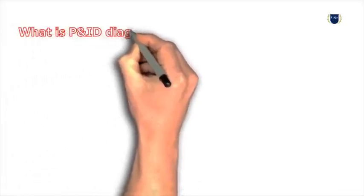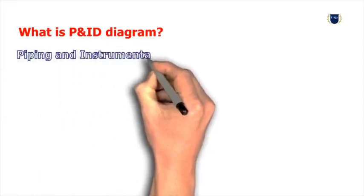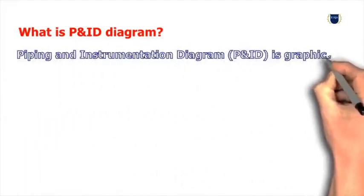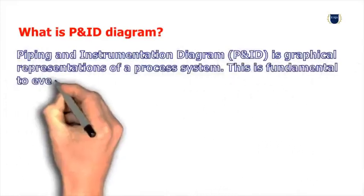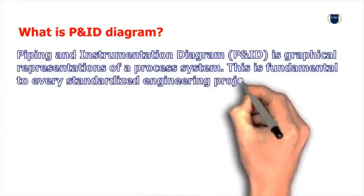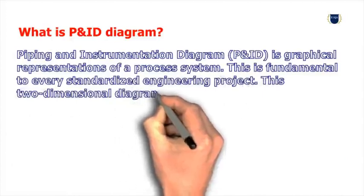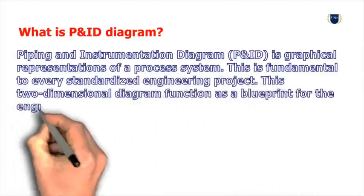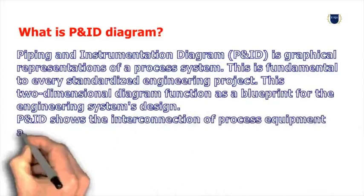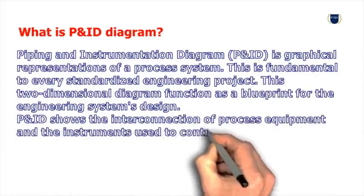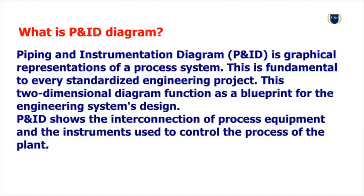What is P&ID Diagram? Piping and Instrumentation Diagram (P&ID) is a graphical representation of a process system. This is fundamental to every standardized engineering project. This two-dimensional diagram functions as a blueprint for the engineering system's design. P&ID shows the interconnection of process equipment and the instruments used to control the process of the plant.